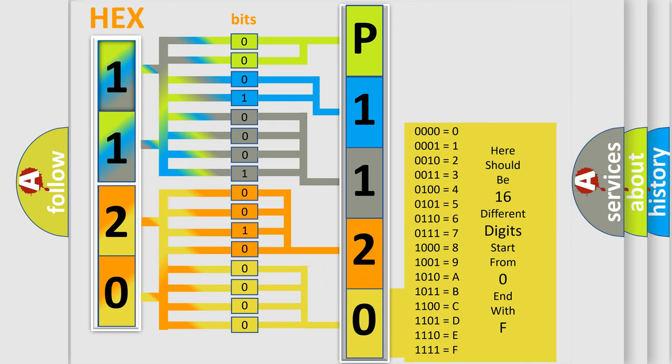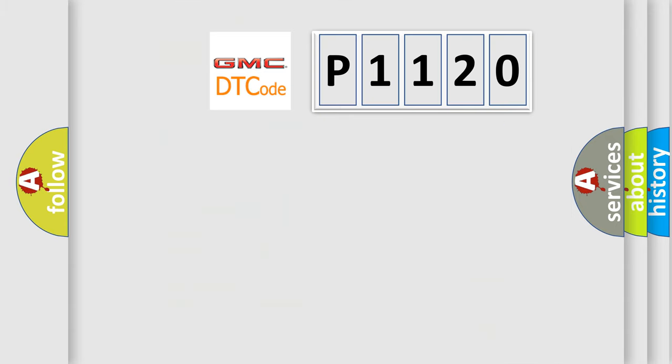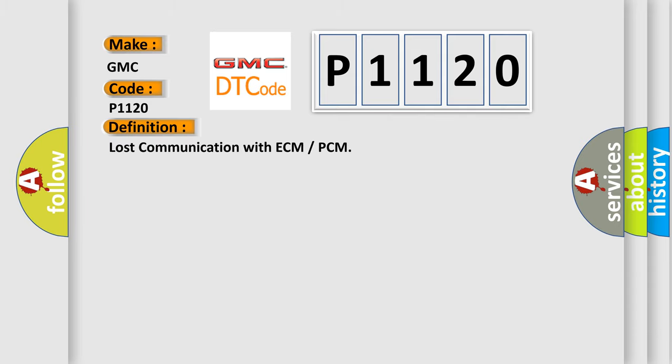We now know in what way the diagnostic tool translates the received information into a more comprehensible format. The number itself does not make sense to us if we cannot assign information about what it actually expresses. So, what does the Diagnostic Trouble Code P1120 interpret specifically for GMC car manufacturers? The basic definition is Lost Communication with ECM or PCM. And now this is a short description of this DTC code.